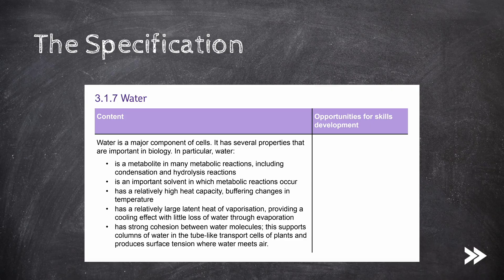Water is a major component of cells. We should know the five main properties of water that are important in biology. These include the fact that water is a metabolite in many metabolic reactions, an important solvent in which metabolic reactions can occur, it has a high specific heat capacity and large latent heat of vaporization, and there is strong cohesion between water molecules, which is especially important in plants and in creating surface tension where water meets air.